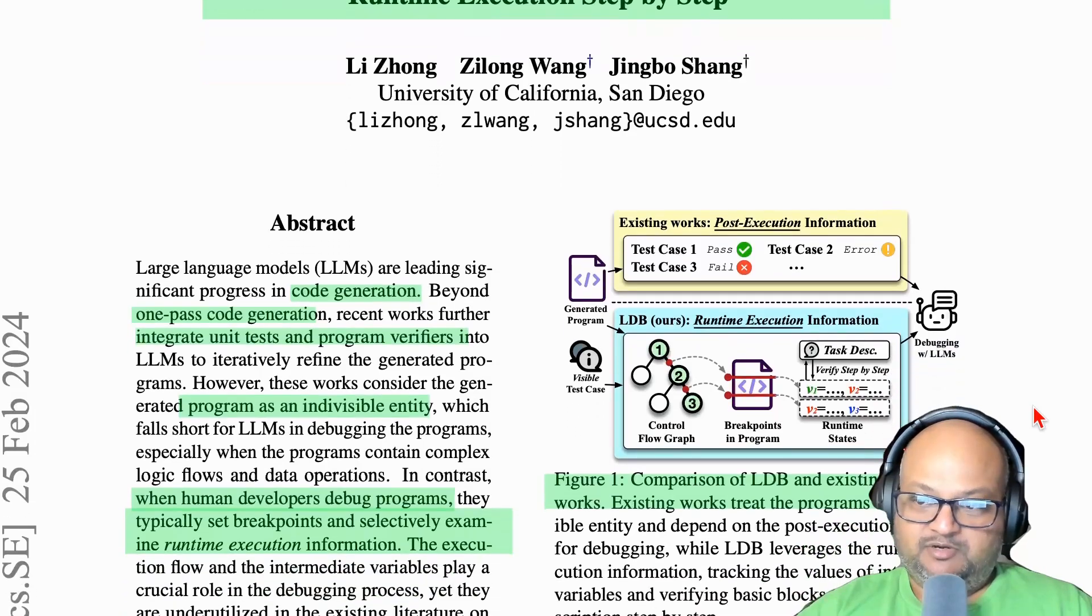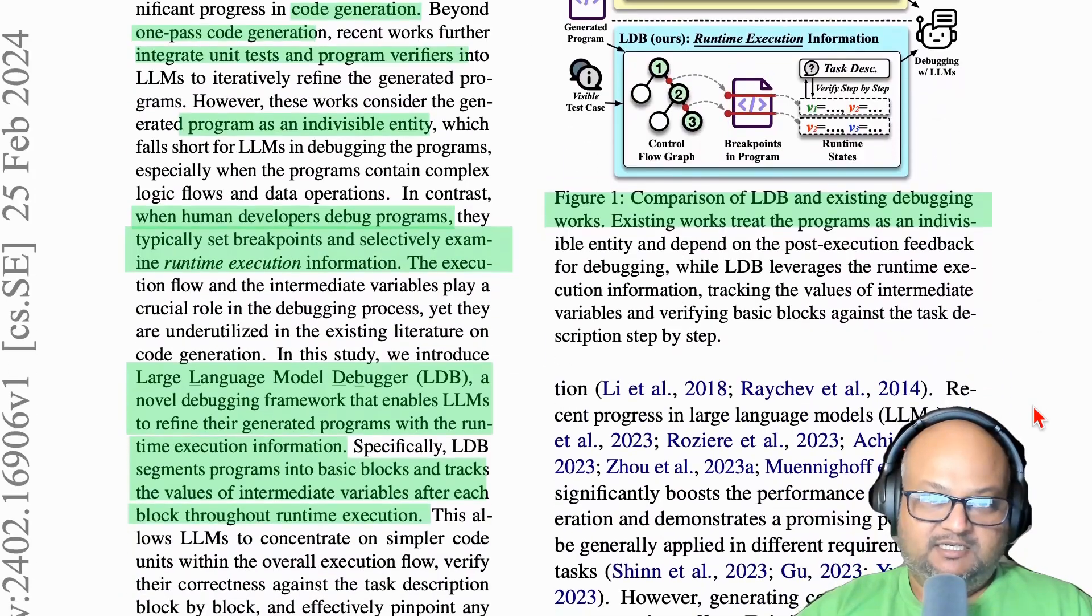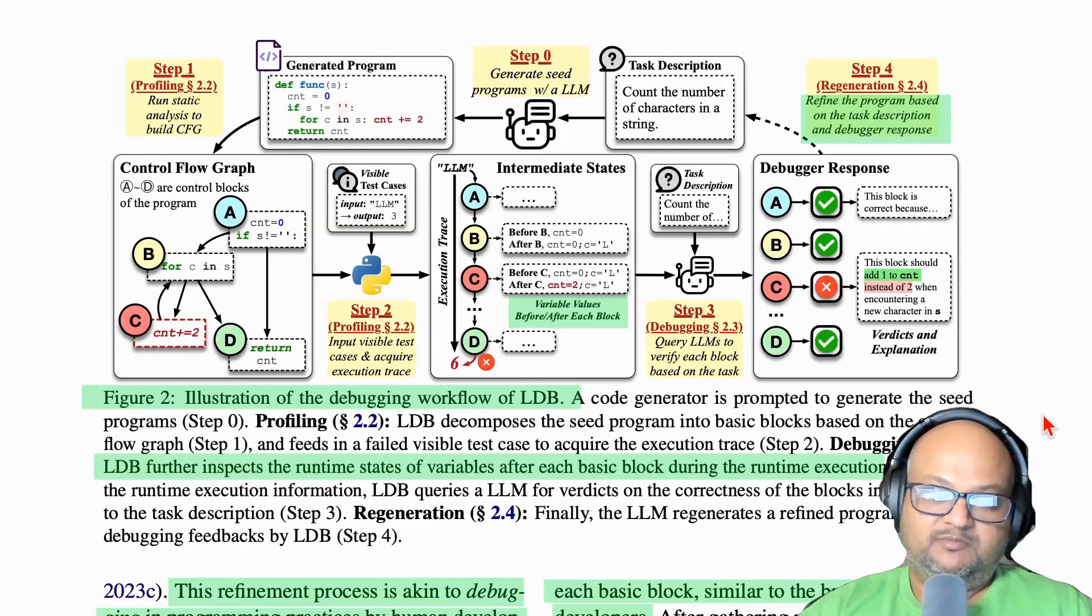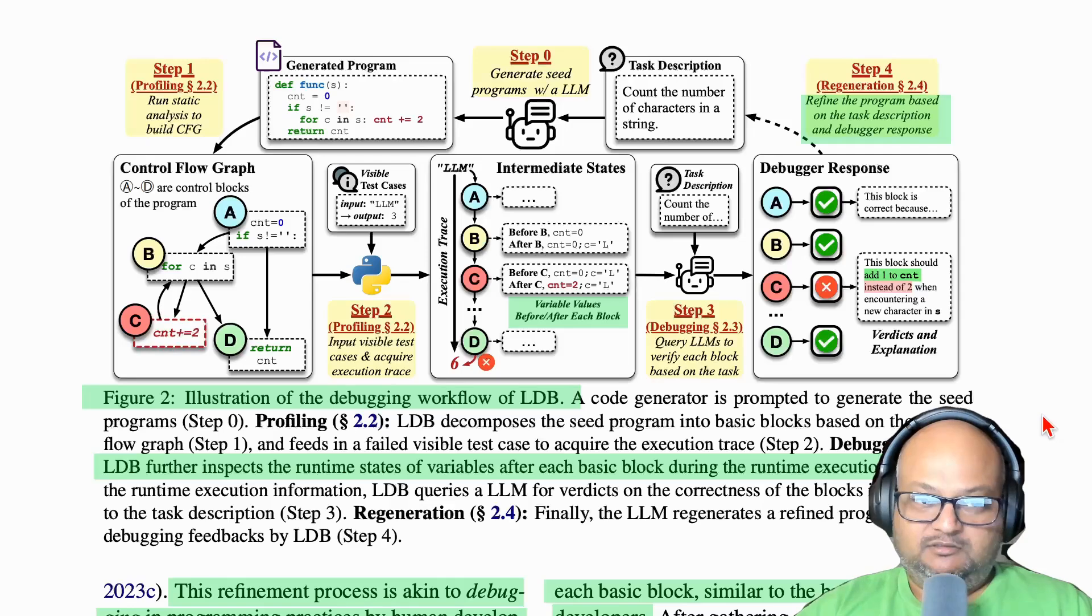The key insight of the paper is to mimic the debugging process that human programmers go through. The typical debugging process will usually have some notion of tracing the values of variables through an execution trace. People might do this by printing values, good old print debugging, or by setting breakpoints and stepping through code in a debugger. It is that visibility into the granular values of variables at various points in the execution that helps programmers debug their code.